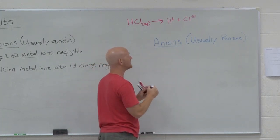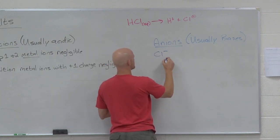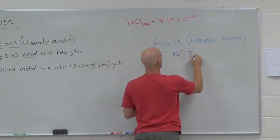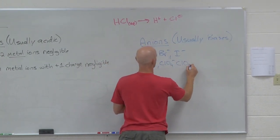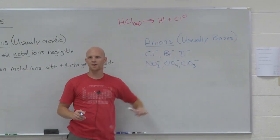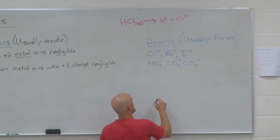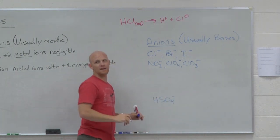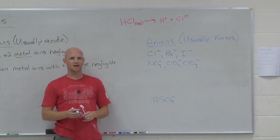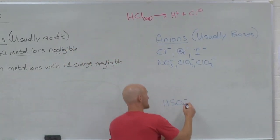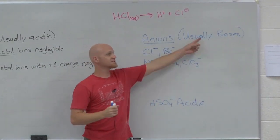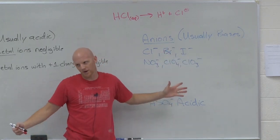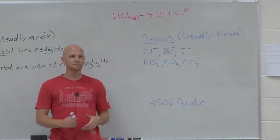The anions you've got to remember that are negligible are like Cl-, Br-, I-, NO3-, ClO4-, ClO3-, all the conjugate bases of the strong acids. However, the other conjugate base is HSO4-. And what do you remember about HSO4-? He's actually acidic. He's one of the grand exceptions to the whole scheme here. He's one of the big exceptions.